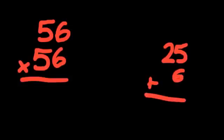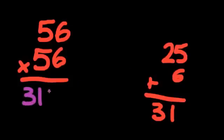31 will be the first two digits of the final answer. Now to get the last two digits of the final answer, multiply the ones digit together. 6 times 6 is 36. So the answer to 56 times 56 is 3136.